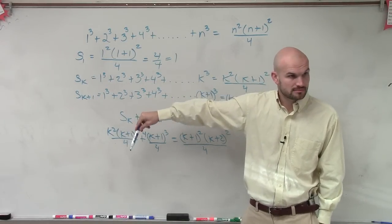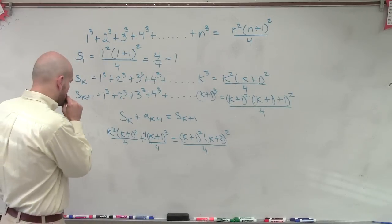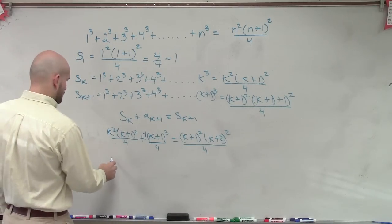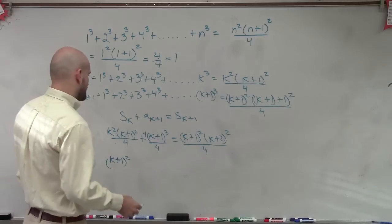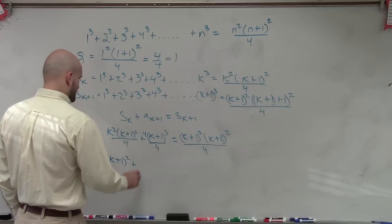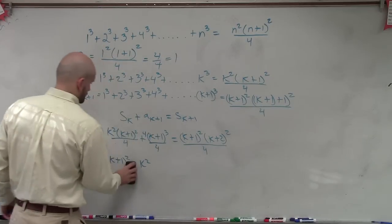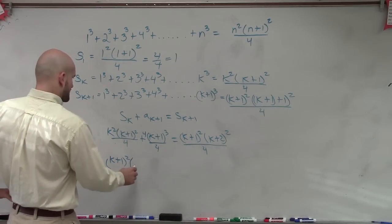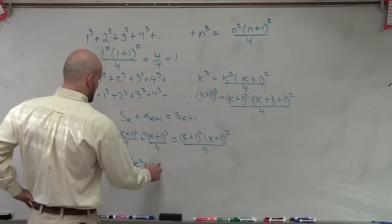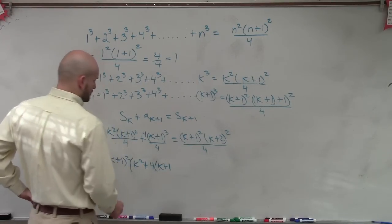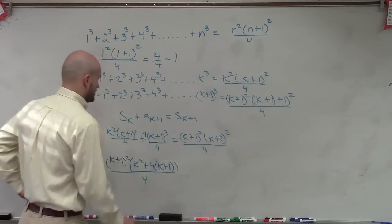So let's try to factor out what do they have in common. They have a (k+1)² in common, right? Yes? Yes. OK. So if I factor out a (k+1)², that's going to leave me with k² plus 4 times (k+1) times 4k plus 4.